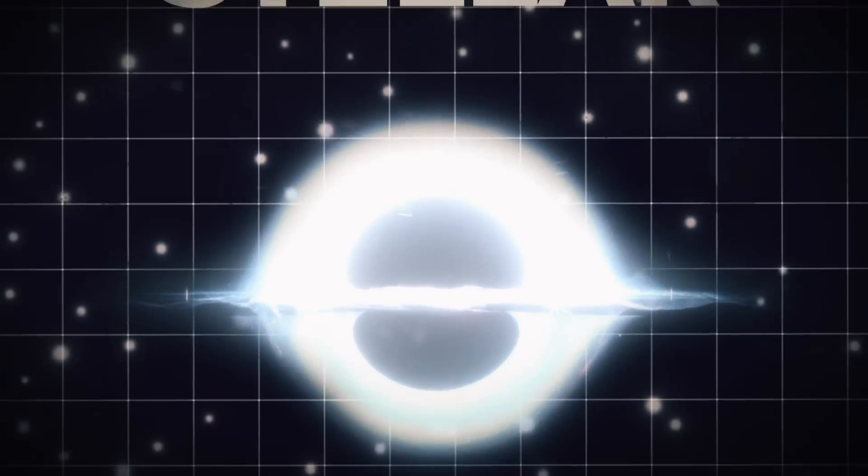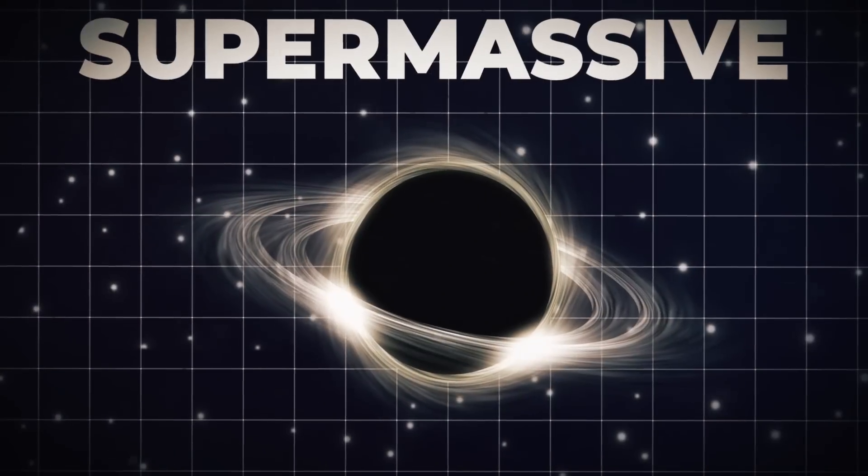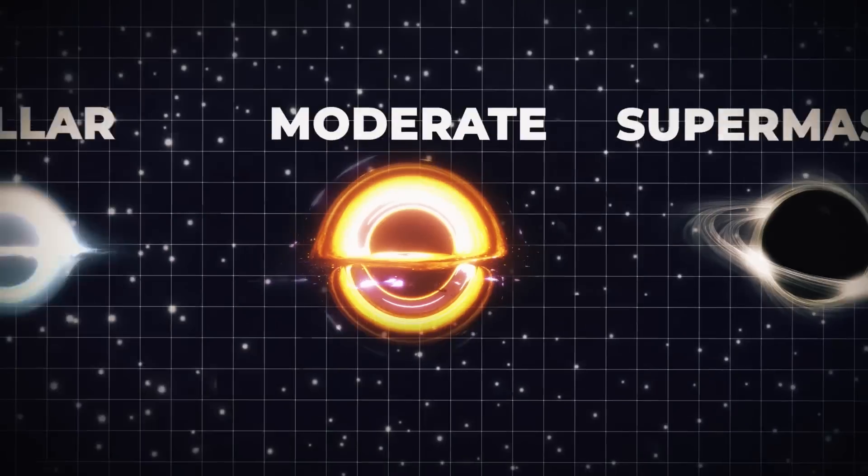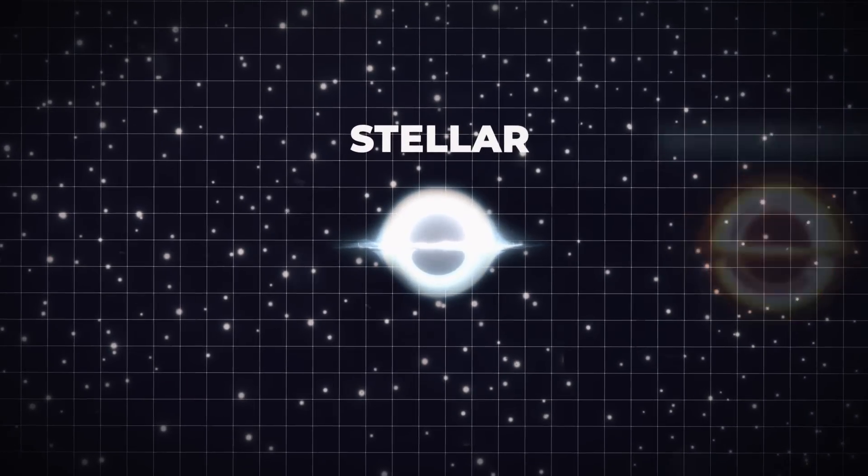Black holes can be classified as stellar, moderate, supermassive, or small. Stellar death is the process that produces black holes the most frequently.